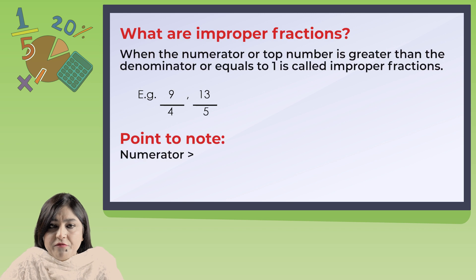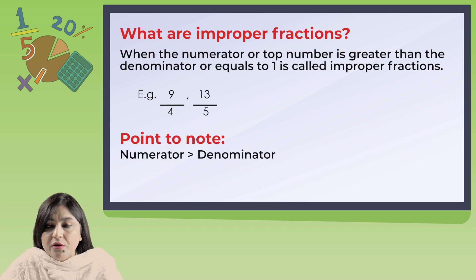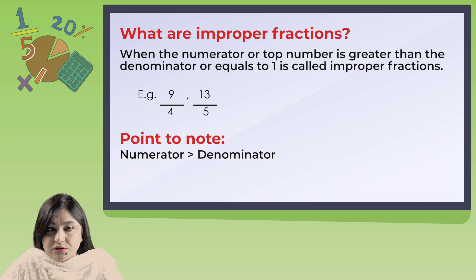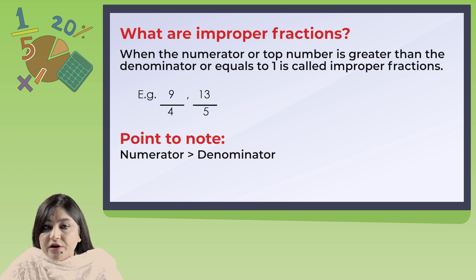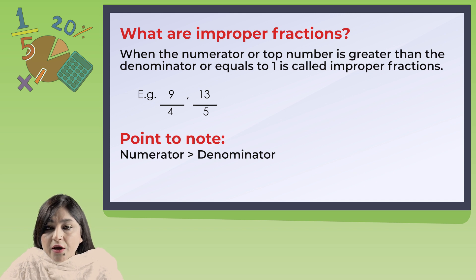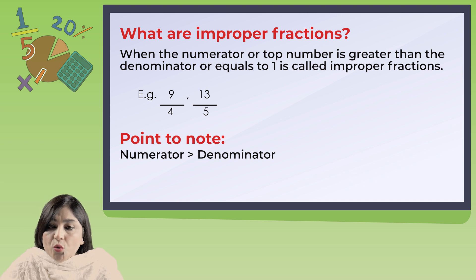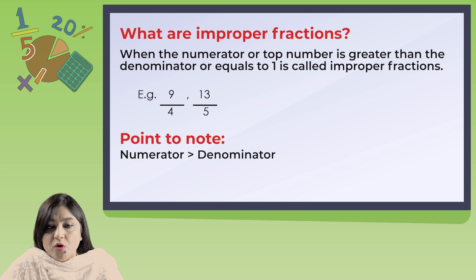Now what are improper fractions? When the numerator or top number is greater than or equal to the denominator, it is called an improper fraction. For example, 9 over 4 — 9 is greater than 4. 13 over 5 — 13 is greater than 5. These are improper fractions. Keep in mind: when the numerator is greater than the denominator, that is called an improper fraction.